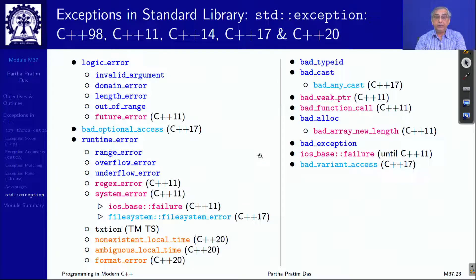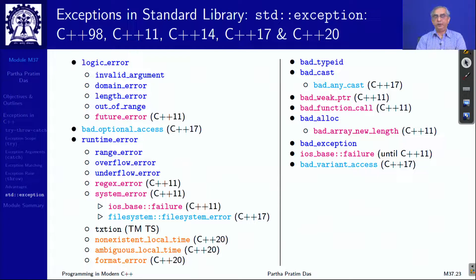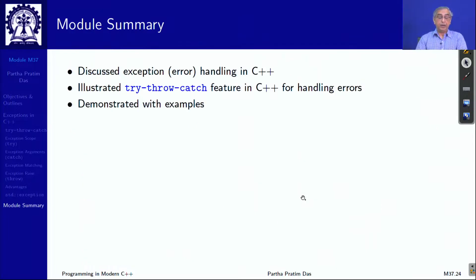Going to the future, later versions of C++ have several extensions to this standard library, shown in different colors here — just for your information; we are not going to discuss these immediately. When we do the modern C++ part, we will talk about some of them. To conclude, we have discussed exception handling in C++ and illustrated try-catch-throw features for handling errors with examples. Thank you very much for your attention. See you in the next module.